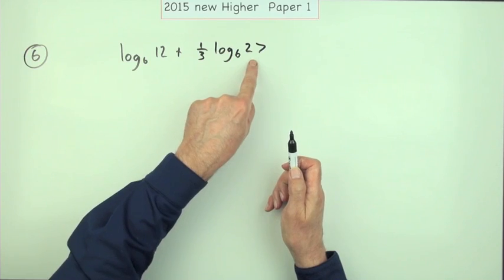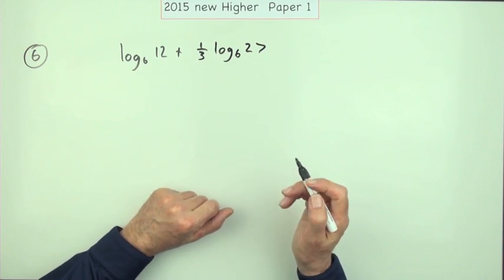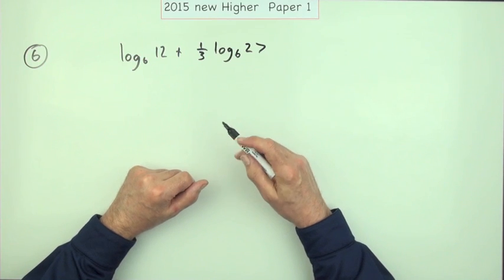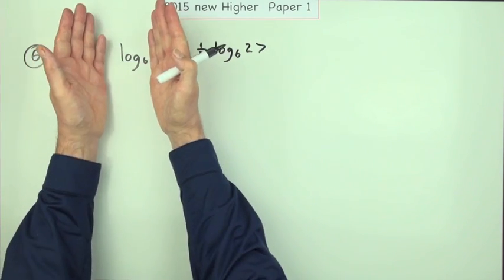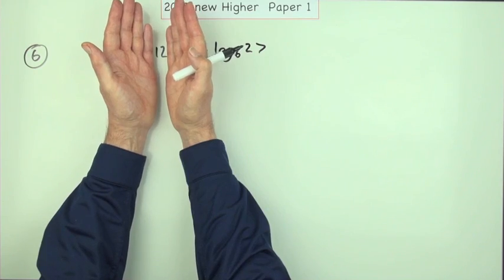If those were handy numbers, if those were actually decent powers of 6, you could just do it as a piece of arithmetic in your head. Remember, log base 6 means: what power of 6 gives me 12?